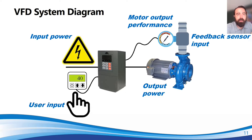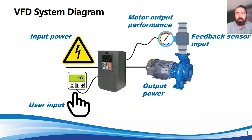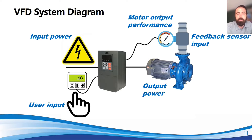Here's a diagram of how it works. You have your input power that feeds into the VFD, and that power is then directed out to the motor itself. You also have a user input — a set point. In this diagram it would be pressure. That pressure sensor feeds back to the VFD, compares it to the set point the user has input, and determines if it needs to speed up or slow down based on what it's seeing versus that set point.